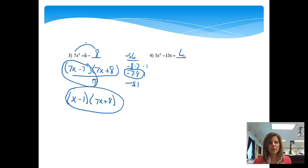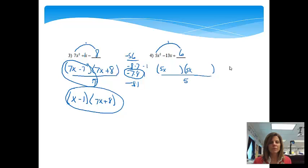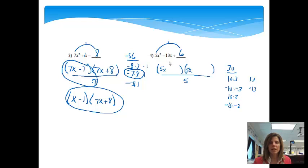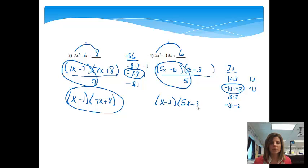I'm hoping that you'll pause the video at this point and try this example and then come back and see how you did. On this one, since it is a quadratic trinomial, we'll set it up the same way: 5x and 5x, but we'll have to divide out that extra 5 when done. 5 times 6 is 30. Let's see: 10 times 3, negative 10 times negative 3, 15 times 2, negative 15 times negative 2. Negative 10 plus negative 3 is negative 13 — exactly what I wanted. So we divide the first factor by 5, giving x minus 2, and the second factor remains 5x minus 3.